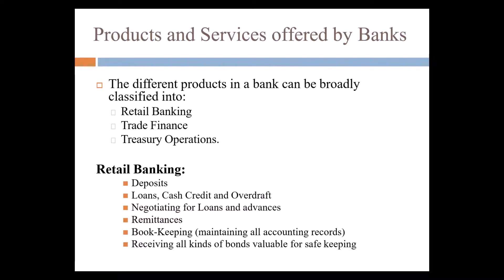In retail banking, you can negotiate with the bank — for example, if Axis Bank offers a business loan for 10 years at X interest rate, you can go to another bank and ask for 0.5% lower interest. Retail banking also includes bookkeeping, maintenance of all accounting records, receiving bonds and valuables for safekeeping, and banks issuing bonds on behalf of government or private parties, including debentures.